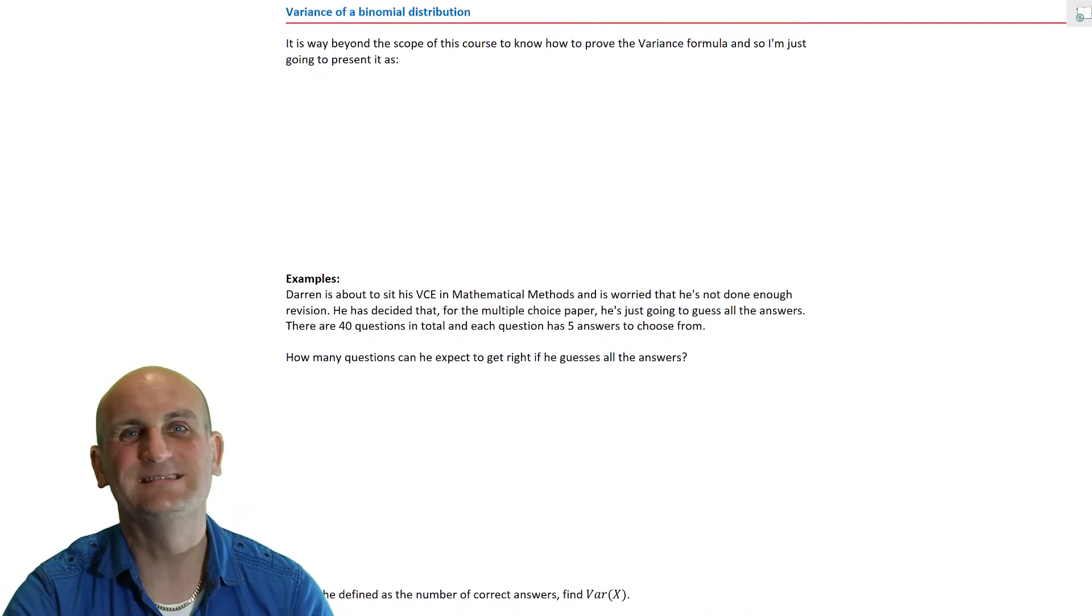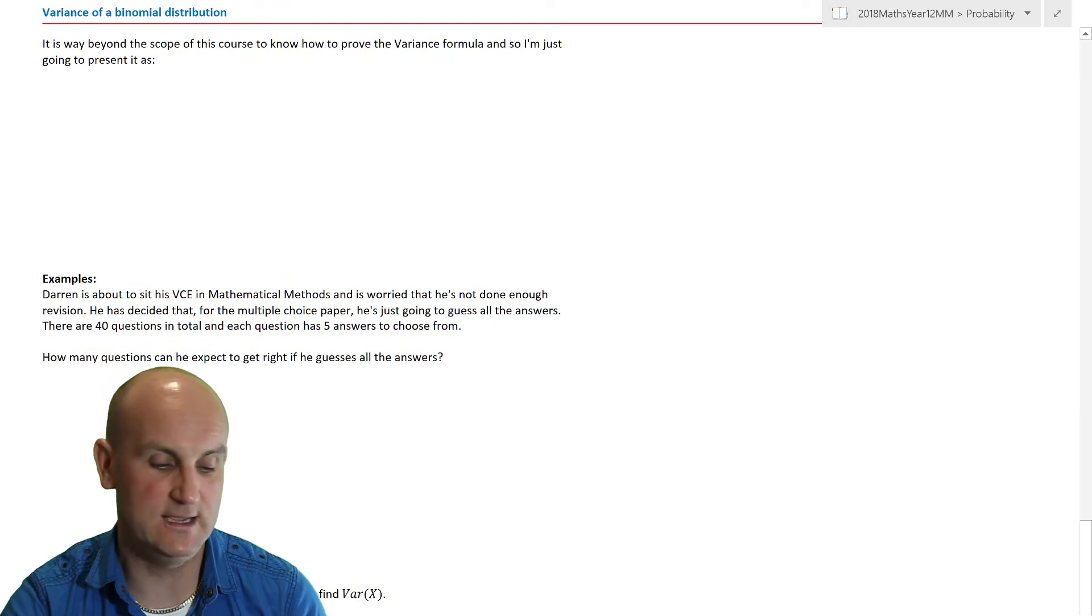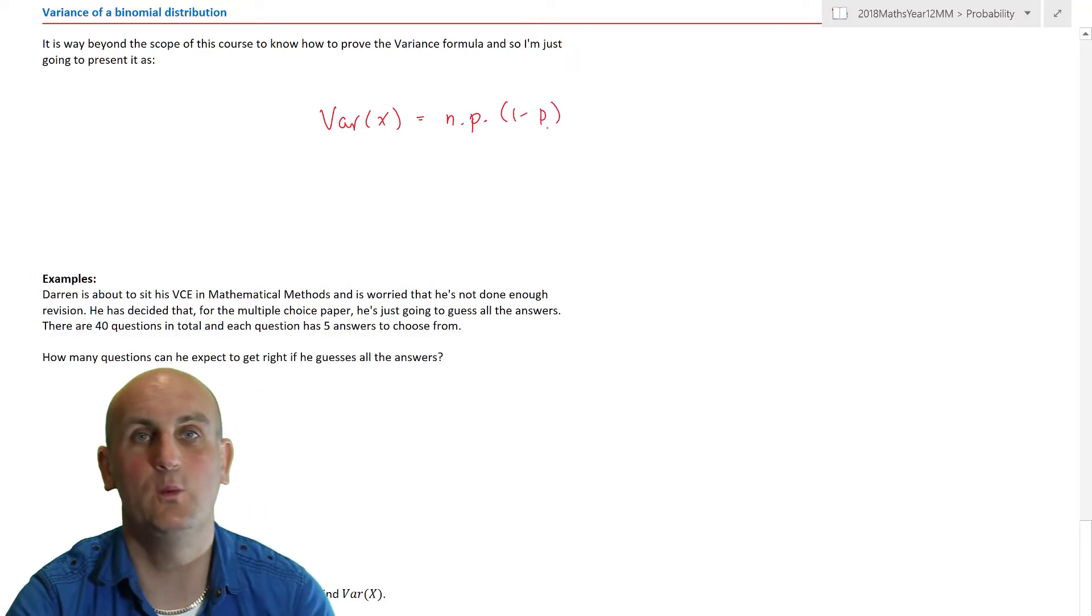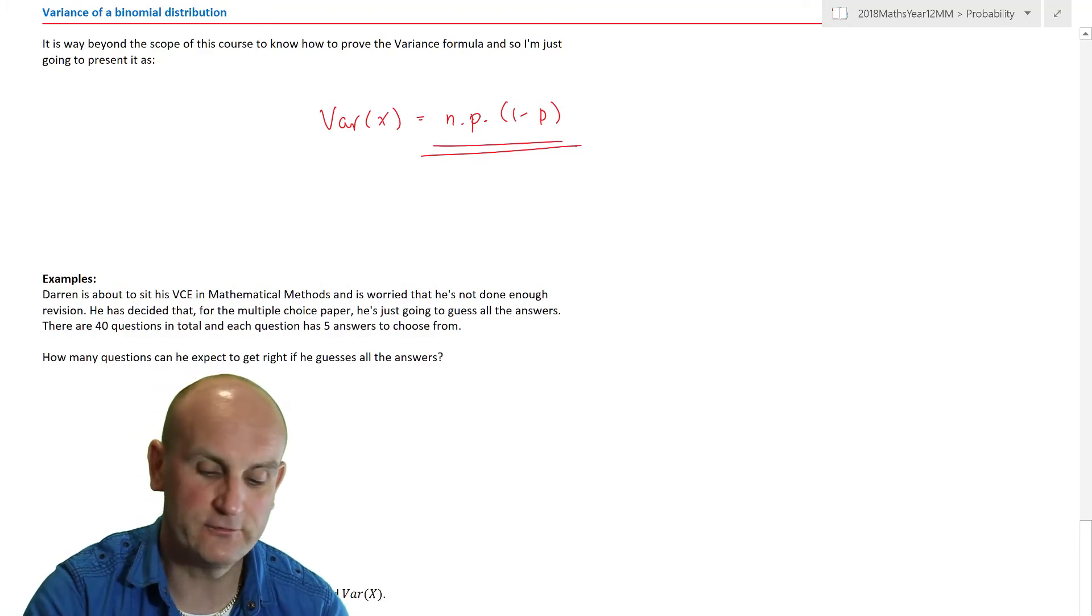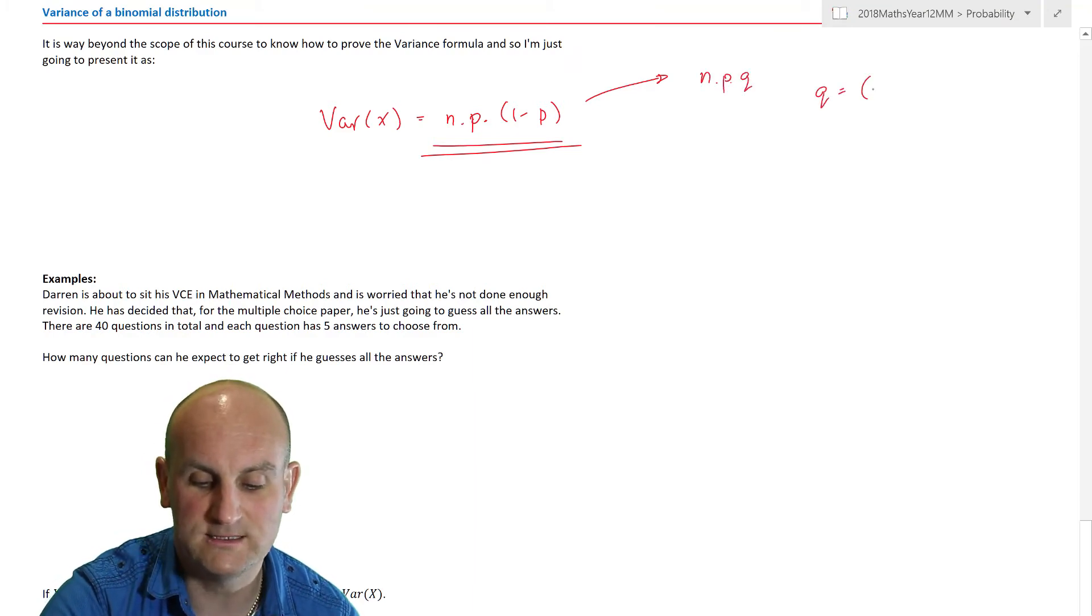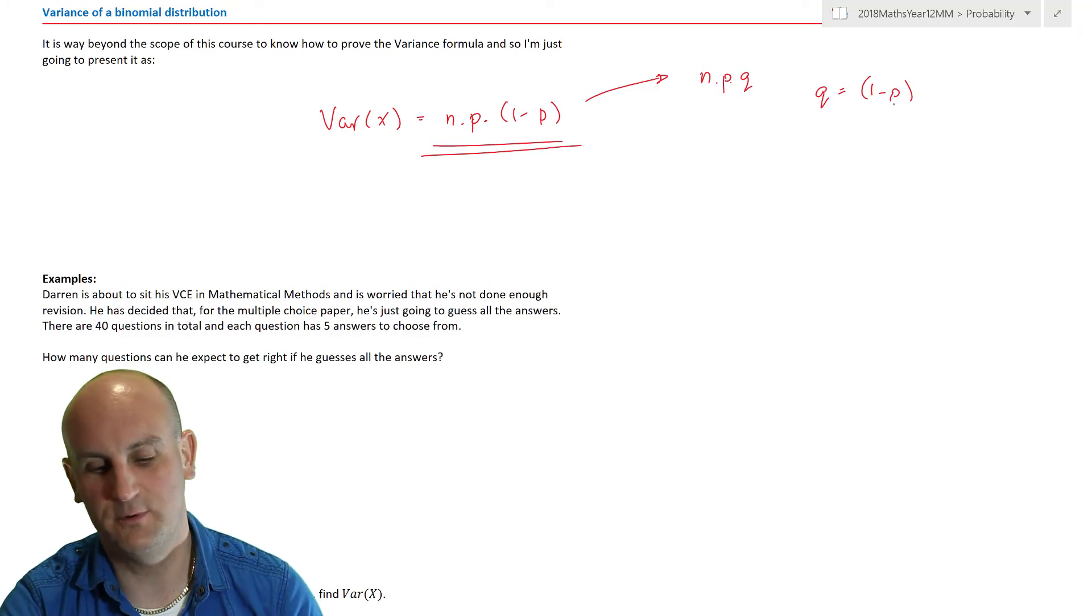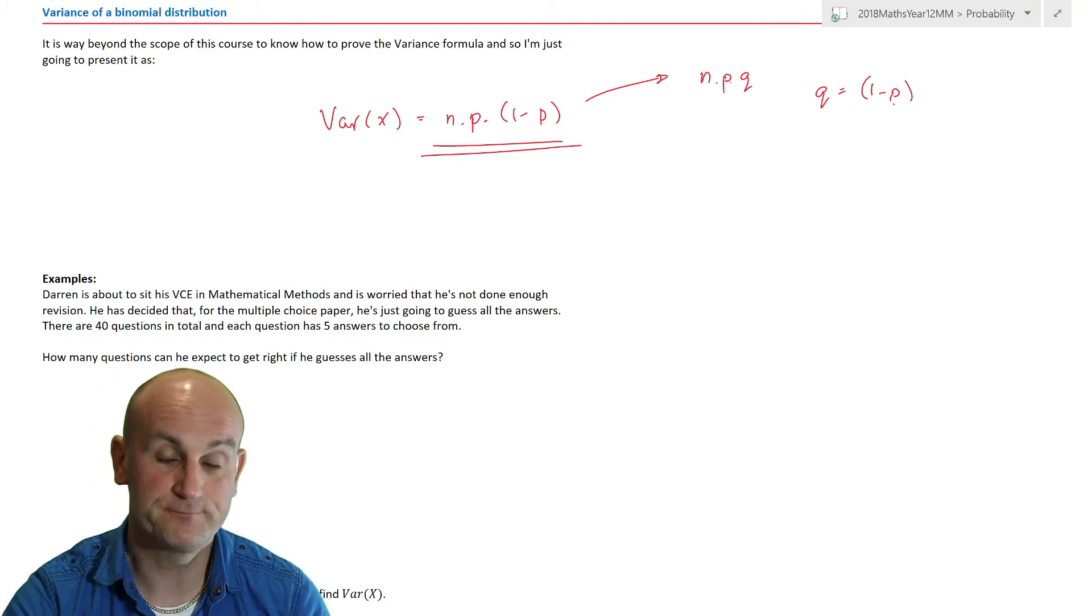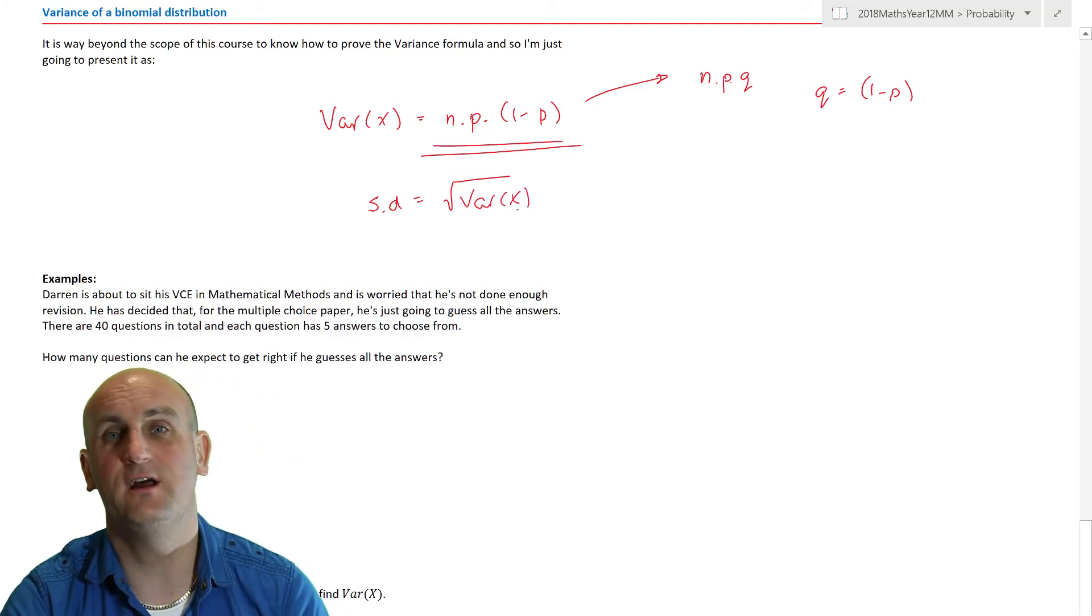What about the variance? I could prove this to you but you'd need university maths, unfortunately way beyond the scope of this course. But what we do know is that the variance of X is given by N times P times 1 minus P. Don't worry about proving it. The point of it is it is N times P times 1 minus P. Sometimes we might see this as N times P times Q, where Q is 1 minus P. We've had P as a probability of success and 1 minus P is the probability of failure. If I wanted to find my standard deviation then I would do the square root of the variance of X.